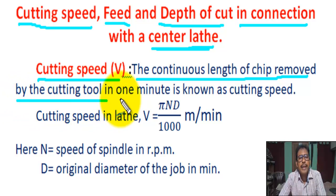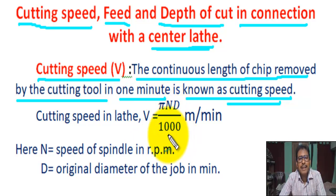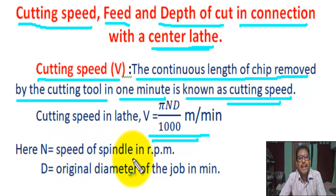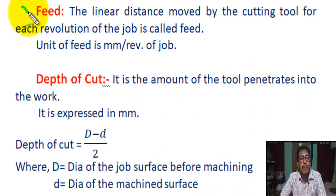So cutting speed in lathe: V = πND / 1000 meters per minute. Here, N equals speed of spindle in RPM (revolutions per minute), and D equals original diameter of the job in millimeters.